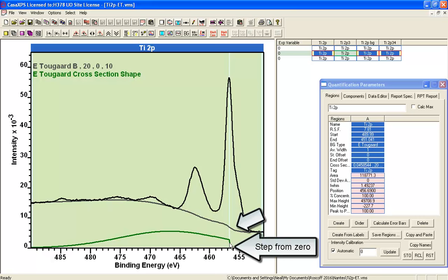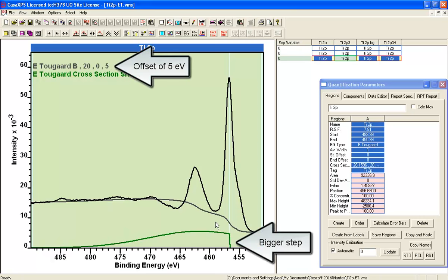So, this is a step in the cross section, and again, making the step more pronounced produces a more pronounced S shape.